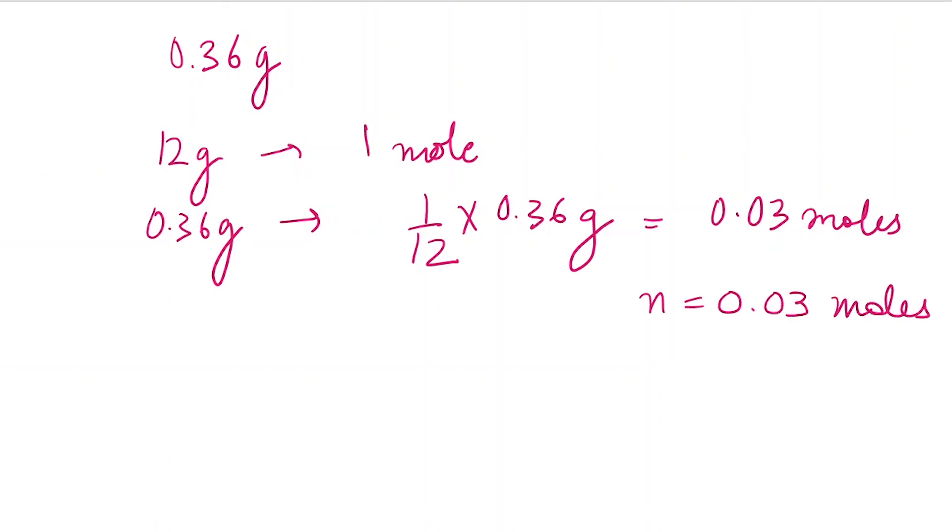Finally, the change in entropy comes out to be 0.118 joule per Kelvin. This is our answer. If you have any doubts related to this question, you can ask me in the comment box. Thank you for watching this video.